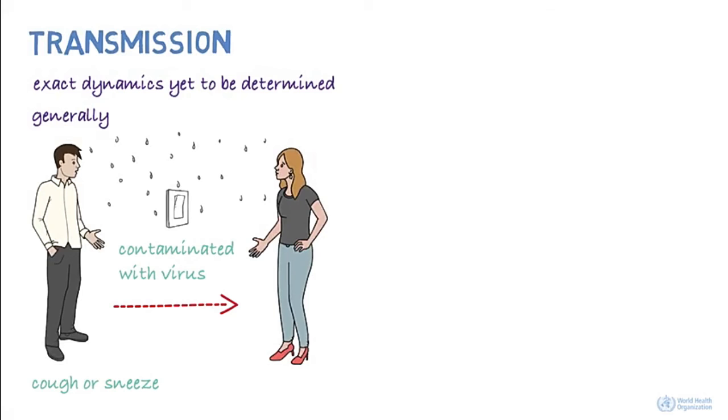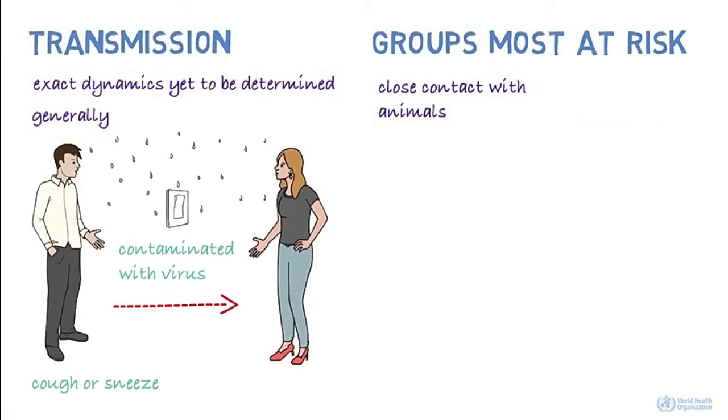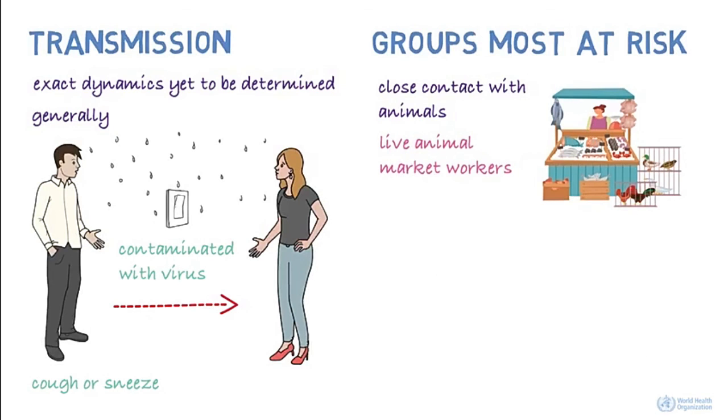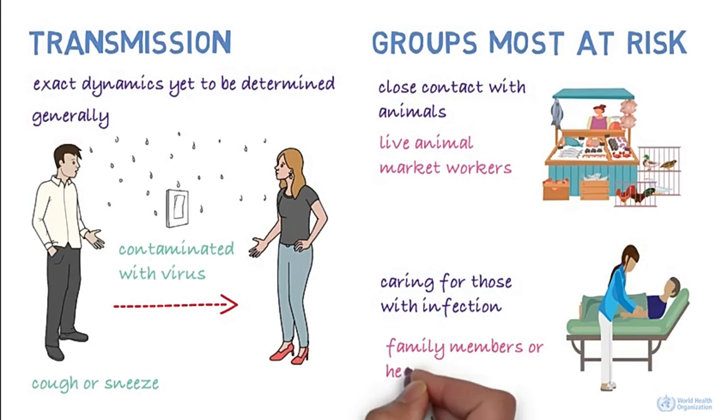People most at risk of infection from the novel coronavirus are those in close contact with animals, such as live animal market workers, and those who are caring for people infected with the virus, such as family members or healthcare workers.